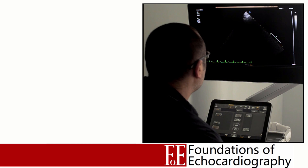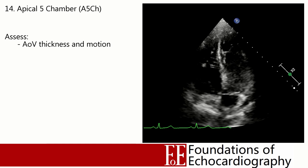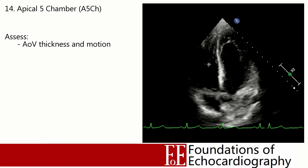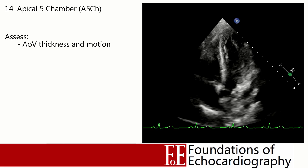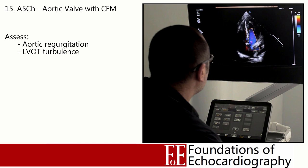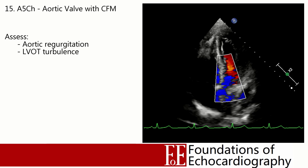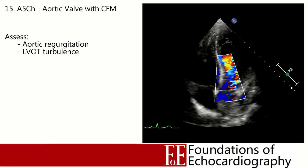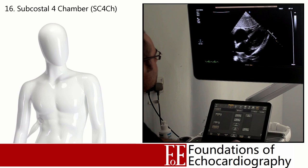Without moving the probe, go back to the apical four chamber view and convert it to an apical five chamber view by tilting the probe to see more anteriorly — lowering the body of the probe. This reveals the left ventricular outflow tract and the aortic valve, sitting anterior to the mitral valve. While we inspect the aortic valve, the principal reason for this view is to place a colour box over the LVOT and aortic valve, looking for turbulent flow within the outflow tract and regurgitation back into the left ventricle.